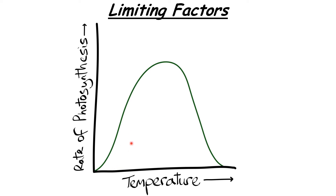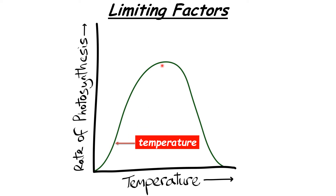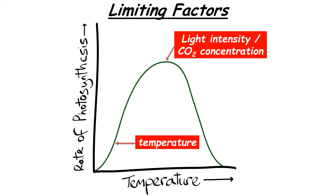The temperature graph looks different. As temperature gets too high, the enzymes involved in photosynthesis are denatured, so the graph doesn't just level off — the rate of reaction falls away completely. Temperature is the limiting factor where the graph is increasing; at the plateau, limiting factors would be light intensity and carbon dioxide concentration.